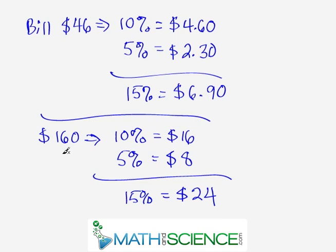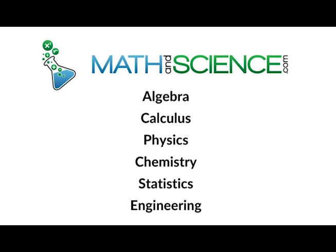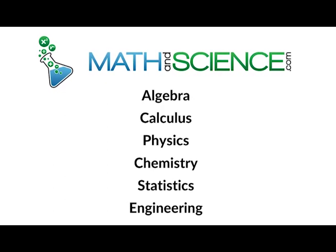But what if your bill was, you know, $162.13? Well, you could certainly do it. But you can round down to $160 or round up a little bit and do this in your head and get the right answer. Learn anything at mathandscience.com.